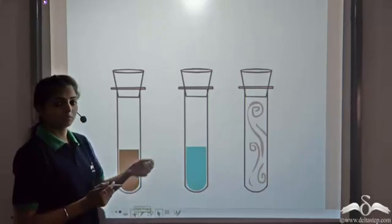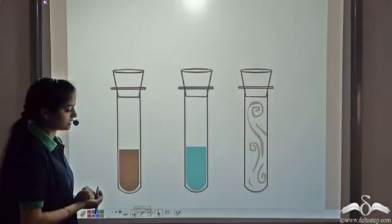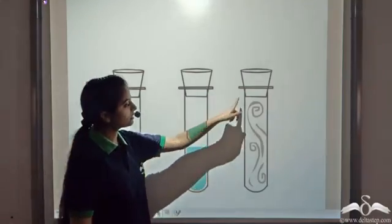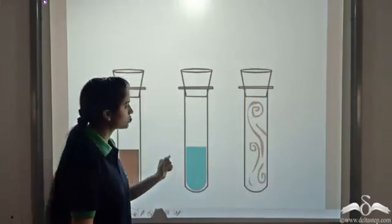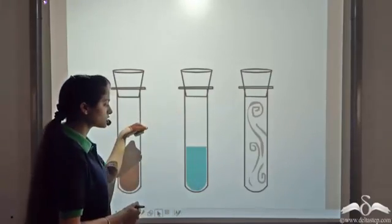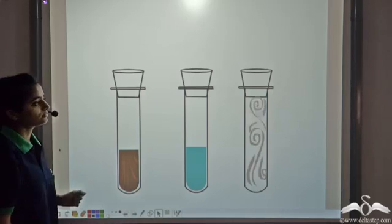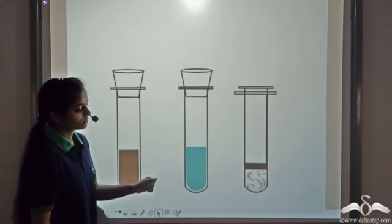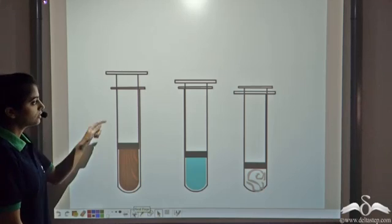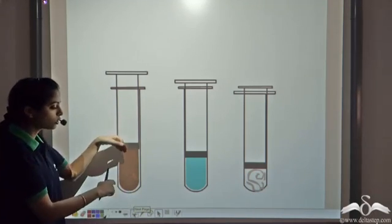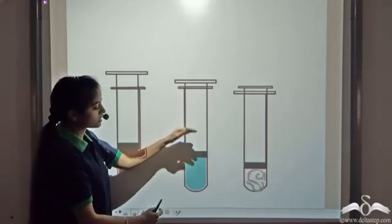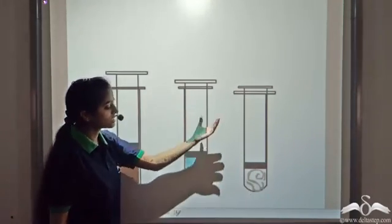Now we'll perform an experiment to check the compressibility of the three states. In the first test tube we have a solid — a piece of wood. In the second, we have a liquid — water. In the third, we have a gas enclosed in the test tube. We'll bring a piston and try to compress all three. We first compress the gaseous state and see that it is compressed to a great extent. For solids, the compressibility is negligible — the piston does not move at all. In the case of liquids, the compressibility is a little more compared to solids.